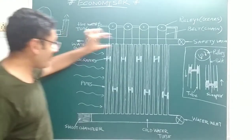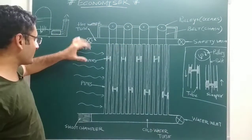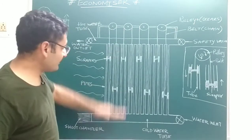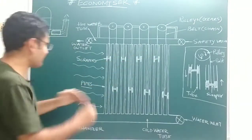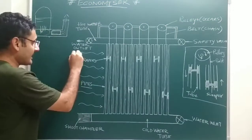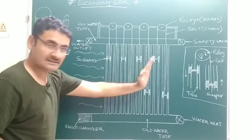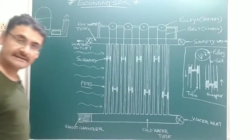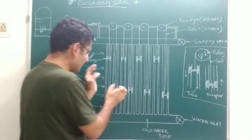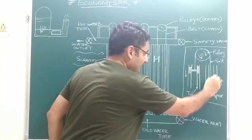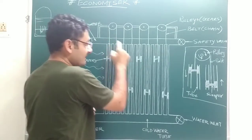The hot water tube also has one water outlet. Whatever heated or high-temperature water is present in the hot water tube is transferred to the boiler — so that water outlet is connected to the boiler. Both tubes are connected with the help of small pipes. From these small pipes, the waste heat of the hot fuel gases passes through, and inside those small pipes the water is heated.